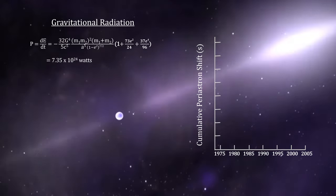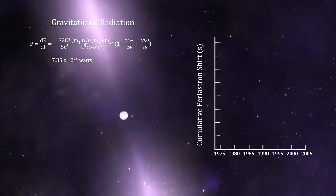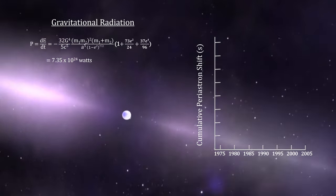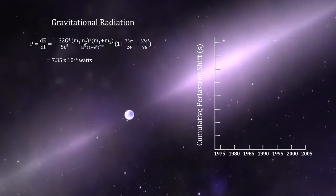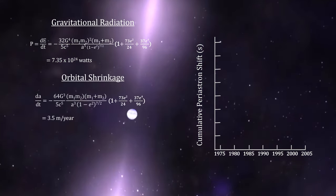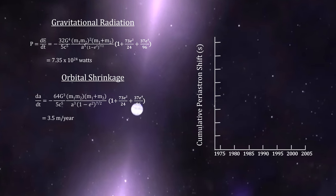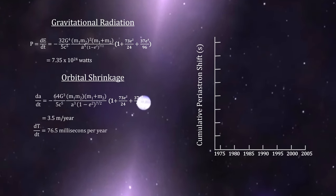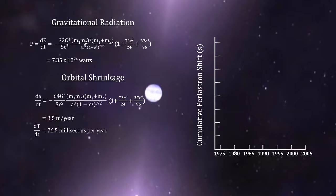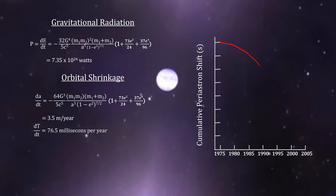With this information and the gravitational wave equations, they were able to calculate the amount of gravitational radiation, the expected decay of the orbit due to the lost gravitational energy, and the corresponding reduction in the time it takes per orbit. This graph maps the accumulated reduction in orbital periods against time, assuming that Einstein's equations are correct.